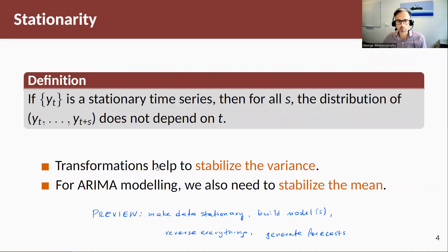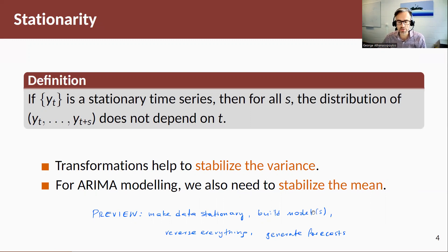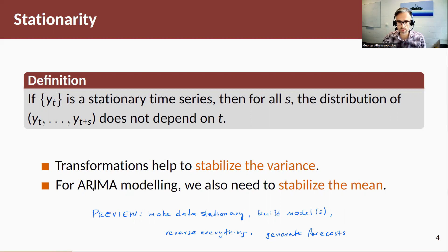If we have non-stationary data, before we start ARIMA modeling we want to make it stationary. Transformations from Section 5.1 help stabilize the variance. With ARIMA models we also need to stabilize the mean, and to do that we use differencing. As a preview: with Autoregressive Integrated Moving Average models, we make the data stationary, build models, reverse everything, and generate forecasts. The 'I' — the integrated part — refers to differencing to make data stationary, and integrating to reverse that.